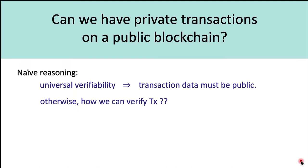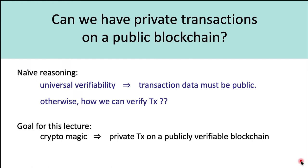However, it turns out this reasoning is not correct. We actually can have private transactions on a public blockchain with universal verifiability. Using some crypto magic, we can have private transactions on a publicly verifiable blockchain.